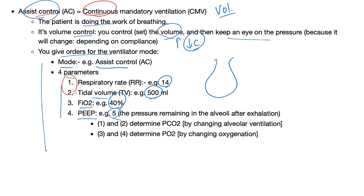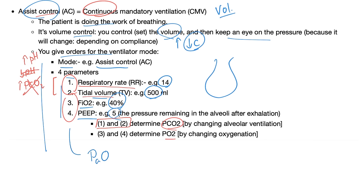If a patient is hypoventilating, PCO2 is increasing, pH is decreasing, and there is respiratory acidosis. What should you do? Increase parameters 1 and 2 — raise the respiratory rate and tidal volume to wash out CO2 and bring pH back to normal. If a patient has hypoxemia and PaO2 is, say, 50 instead of 100, control parameters 3 and 4: increase FiO2 and PEEP — increase oxygen delivery and prevent alveolar collapse.